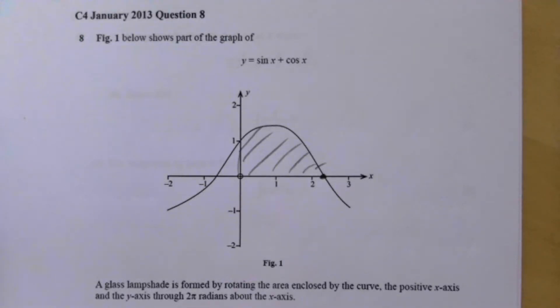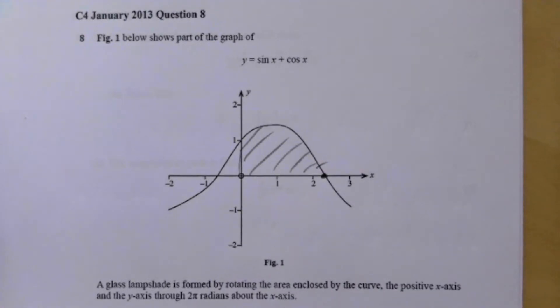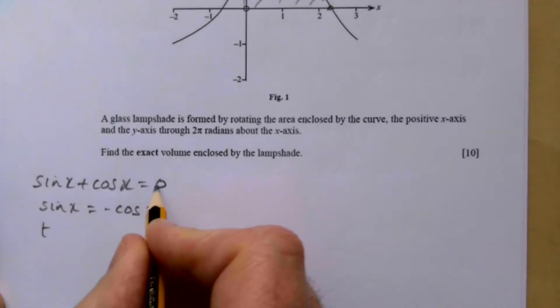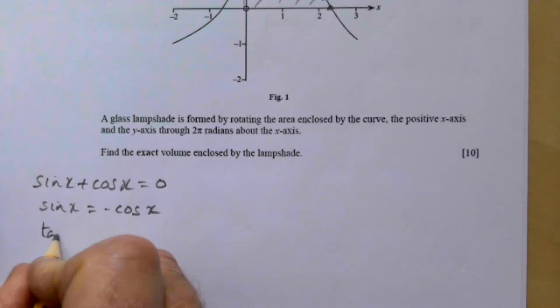And then if you divide by the cos x you will get tan x. So sine x plus cos x, we let it equal to zero. Sine x equals minus cos x, and then tan x is minus one.